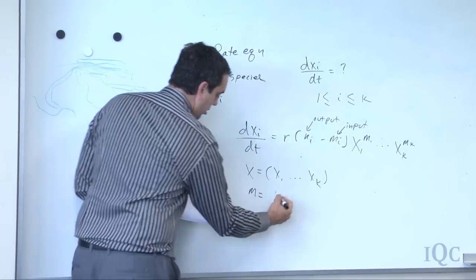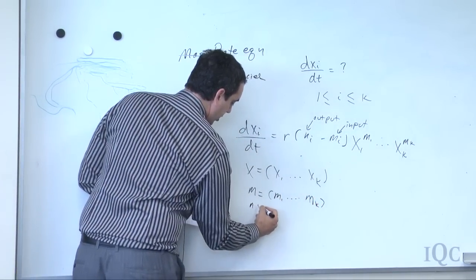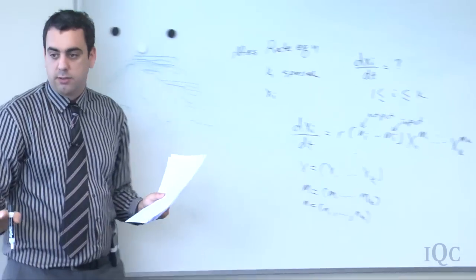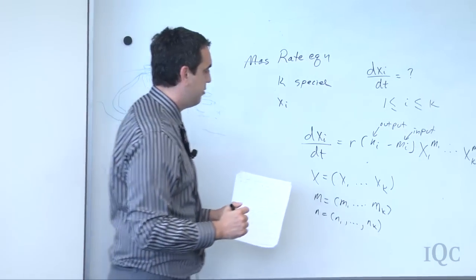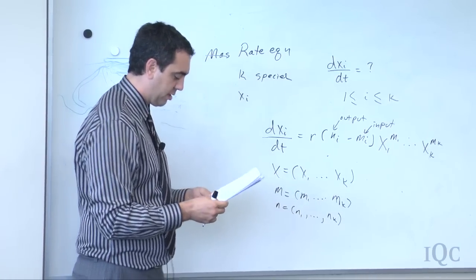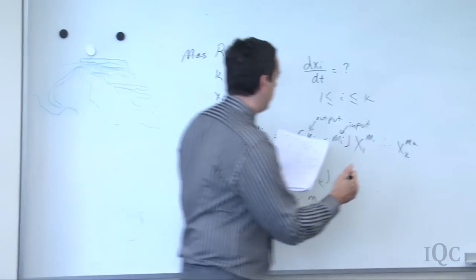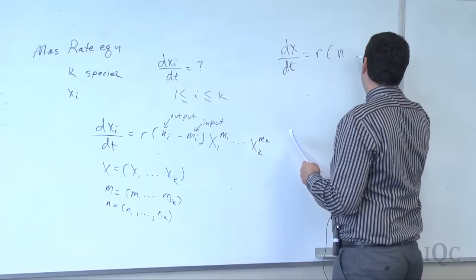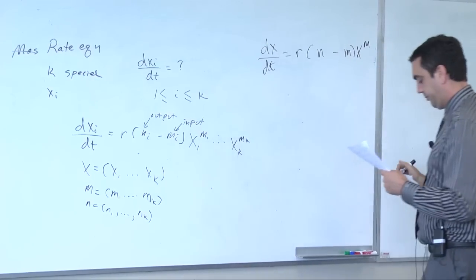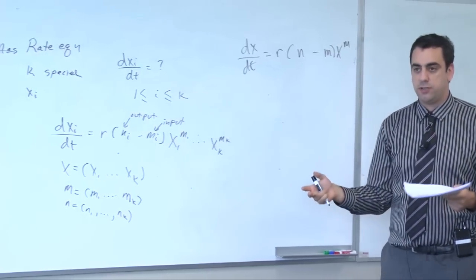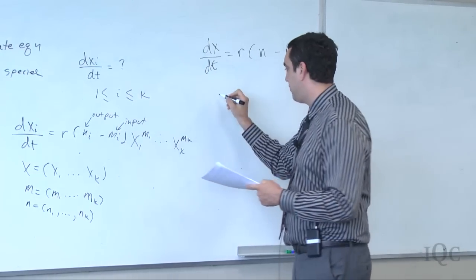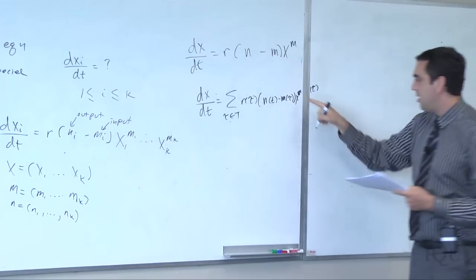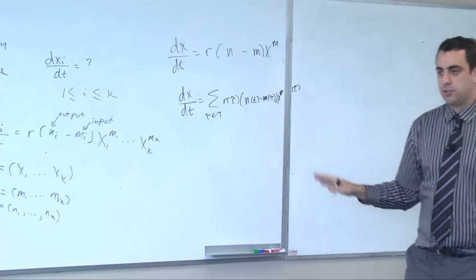Assuming there's one transition, we end up with dx/dt equal to r times (n minus m) times x^m. If there's a collection of transitions, you add a sum over all transitions tau to get the full rate equation, taking into account all possible transitions m(tau). This gives you the average concentration of your species.